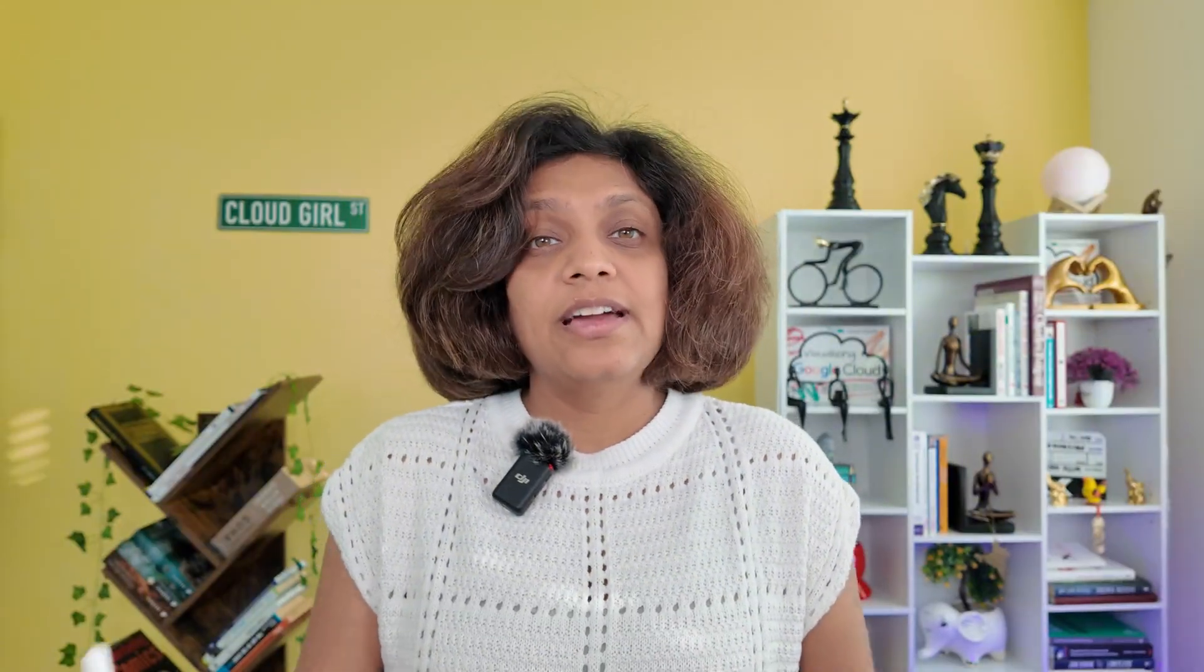As AI agents become more common, we need standardized ways for them to communicate. That's where agentic protocols come in. There are two major protocols you need to know about right now.